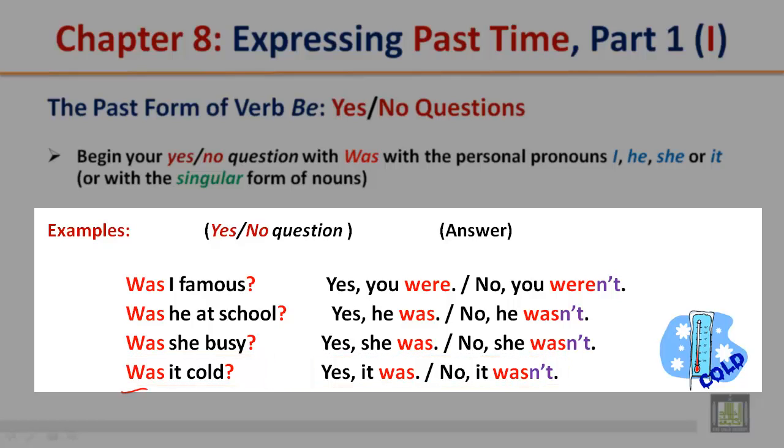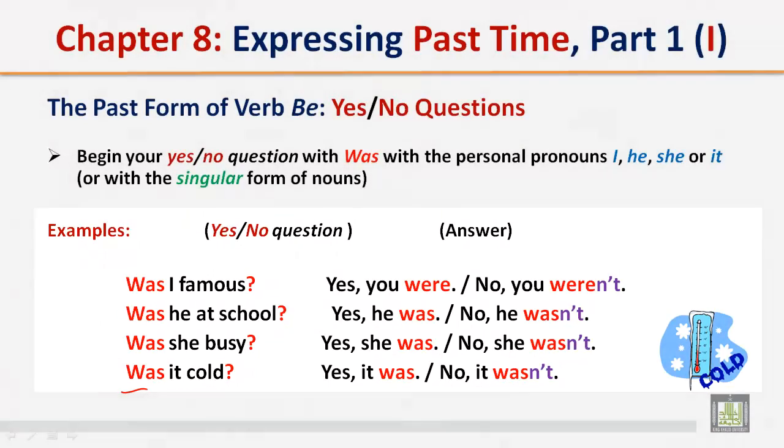Notice: 'was' goes before the personal pronouns I, he, she, or it.